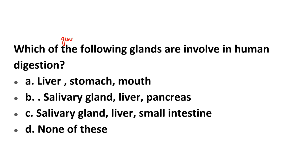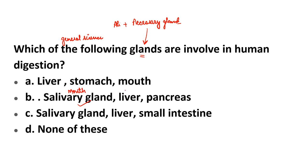From general science, a very important question: In the last video I explained digestion in the alimentary canal and the accessory glands involved. The question here is which glands are involved in human digestion. The three accessory glands are the Salivary Gland (secretes saliva in the mouth), the Liver (secretes bile juice for fat digestion), and the Pancreas (produces pancreatic juice). All three play a role in digestion — B is the correct answer.